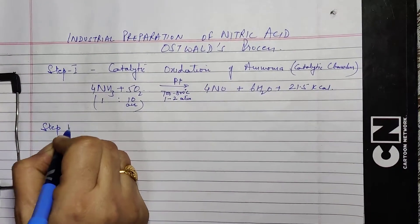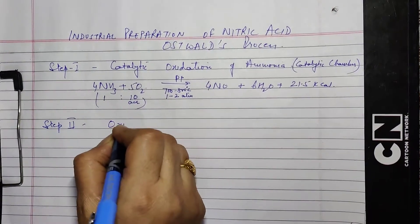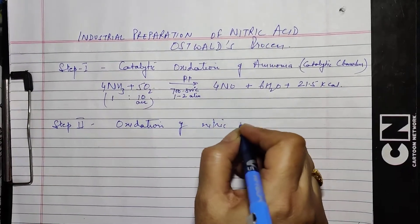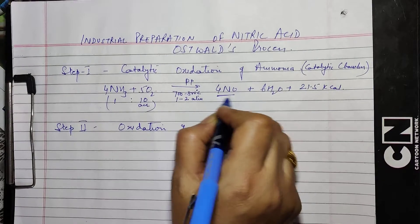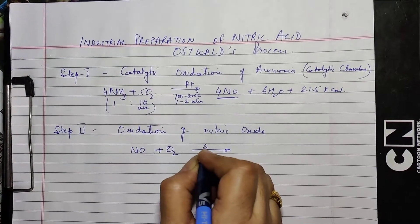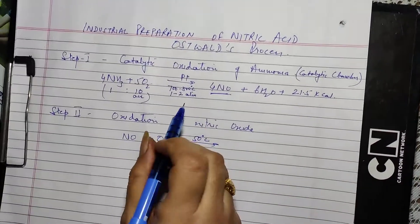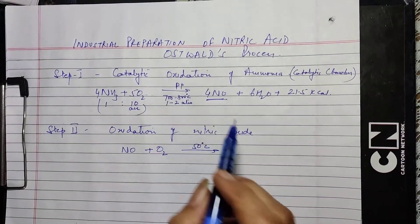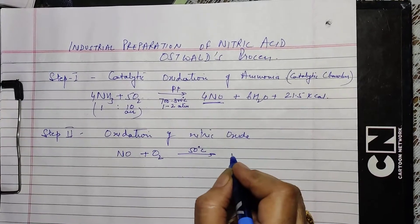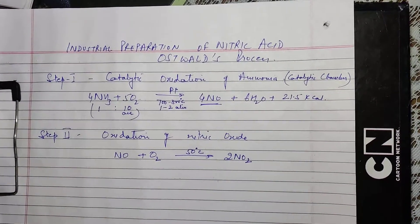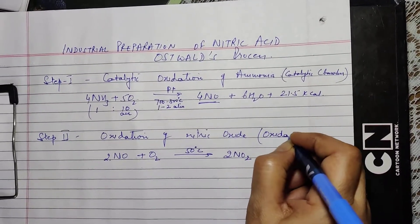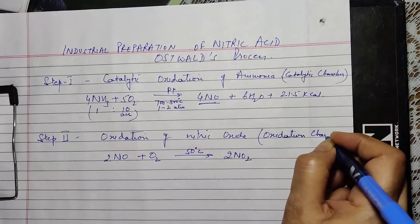Step 2 is the oxidation of nitric oxide. The nitric oxide which is formed oxidizes at a temperature of 50 degrees Celsius. Note the difference in temperature: in the first step the temperature was 700 to 800 degrees, while in the second step the temperature required is only 50 degrees Celsius. This forms NO2.